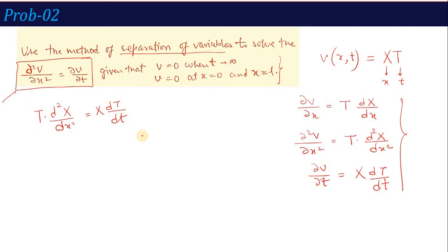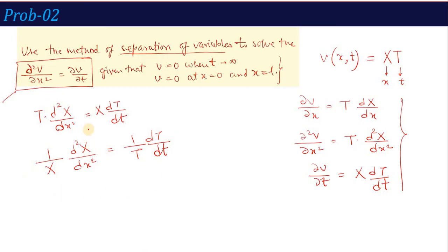In the next step, we divide both sides by X·T. This gives (1/X)·(d²X/dx²) = (1/T)·(dT/dt). To solve this equation and find the values of capital X and capital T, we let this equation equal to −p². We then compare both parts — one side involving capital X and the other involving capital T — to find out each solution.